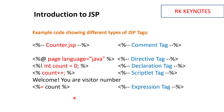The last tag is the expression tag, which uses an equal-to sign. Basically, if you want to calculate something or write some formula, you use this expression tag. It will print whatever value is stored in a particular variable. These are all the basic tags you need to understand, and we will be using them in most of the programs.